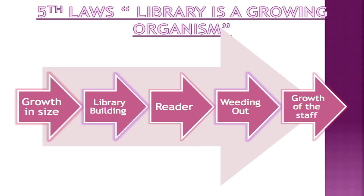To summarize, the Five Laws of Library Science are: one, Books are for Use; two, Every Reader His or Her Book; three, Every Book Its Reader; four, Save the Time of the User; and five, Library is a Growing Organism. With these principles, we can properly organize and manage library services. Thank you, dear learners.